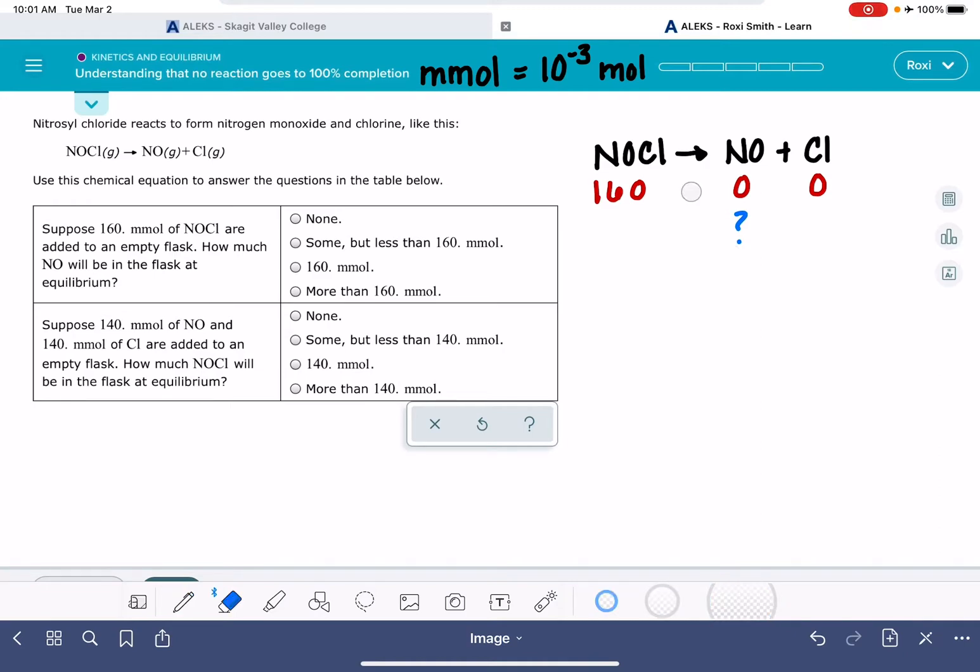Well, because this is in equilibrium, I don't like that forward arrow. We really should be using the equilibrium arrows here for this reaction. Because the reaction is in equilibrium, I know that some of this 160 millimoles will react, and some of it will be converted into NO and CL, but not all of it, just some of it. And that's what the equilibrium means.